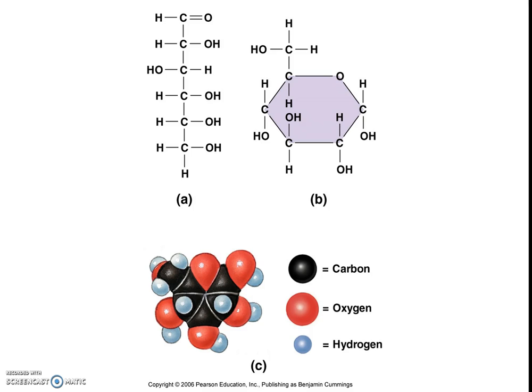Hydrogen can only make one bond, so everywhere we see a hydrogen, it will only have one bond attached to it. Since this is understood, we can take a shorthand form and we don't necessarily have to show all of the carbons, hydrogens, or oxygens. We can just show the basic ring structure, even though they will usually still include the oxygen in the corner so it won't be confused for a carbon.